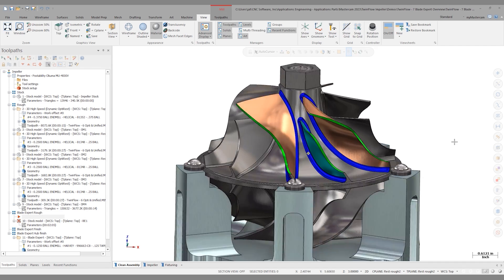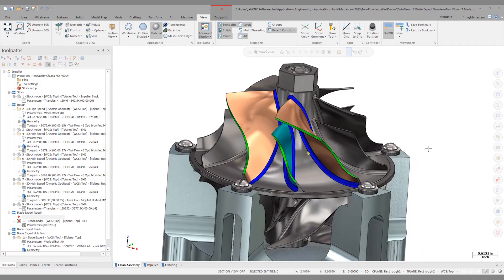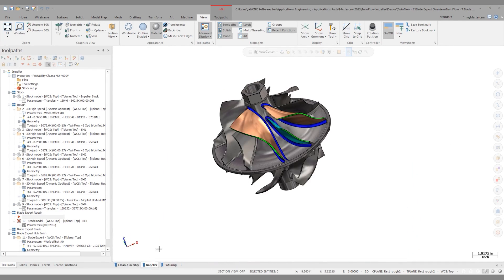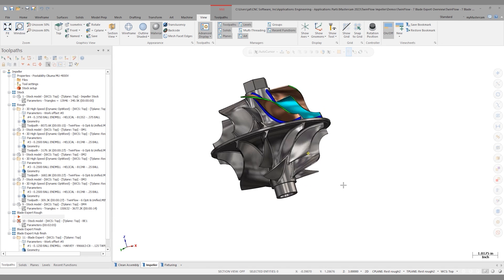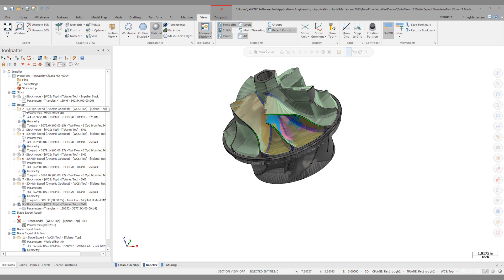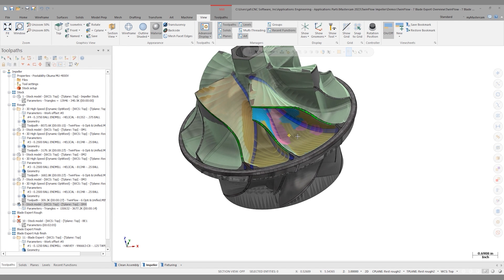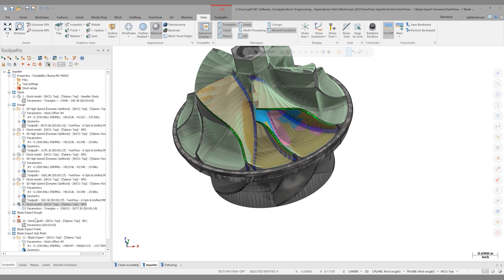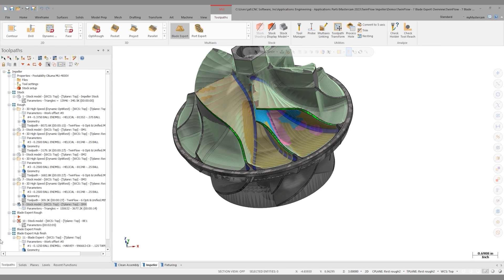Okay, so we're back in Mastercam looking at this TwinFlow dual-sided impeller. If I want to, I can go to the second view sheet and isolate the part. Sometimes it can make it easier for programming purposes, and I really like to use view sheets like this, especially for a complex assembly. So we have the previously programmed 3 plus 2 OptiRough operations, and we kind of talked about some of the problems there. So let's look at what we can do with BladeXpert here. I'm going to go to the toolpaths tab and launch a BladeXpert toolpath.